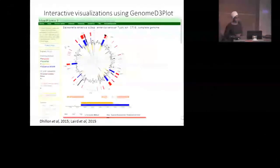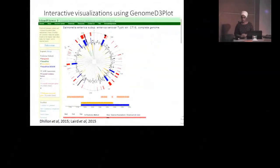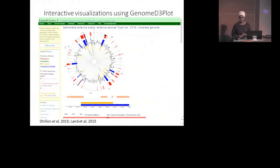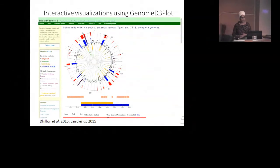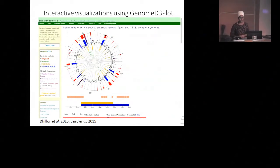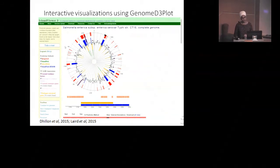Recently we've done a lot of work on improving our visualizations in Island Viewer. We've developed a JavaScript library called Genome D3 Plot, and it has a lot of different applications including eukaryotic genomes. If you're interested, look up our latest publication by Matt Laird in our lab.